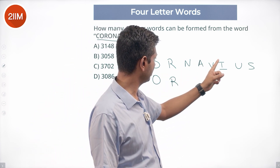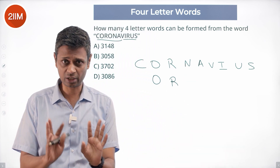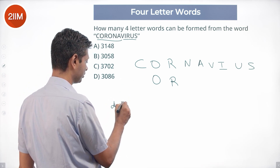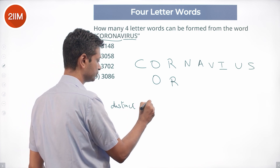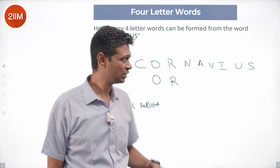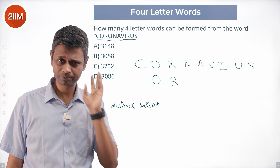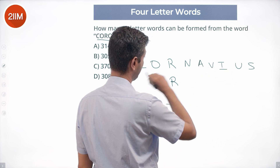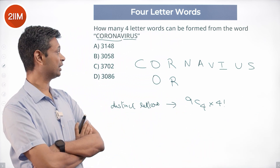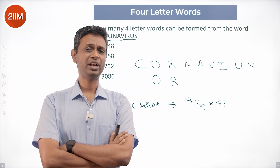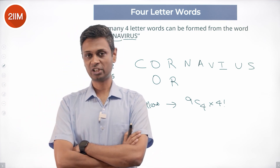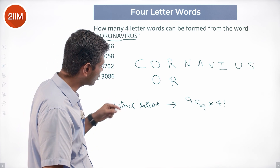There are 11 letters total: 1, 2, 3, 4, 5, 6, 7, 8, 9 plus 2 equals 11. For four-letter words, the first case is four distinct letters. Out of these nine distinct letters, select four in 9C4 ways and arrange them in 4! ways — for example, selecting C, R, N, A and rearranging them in all possible ways.